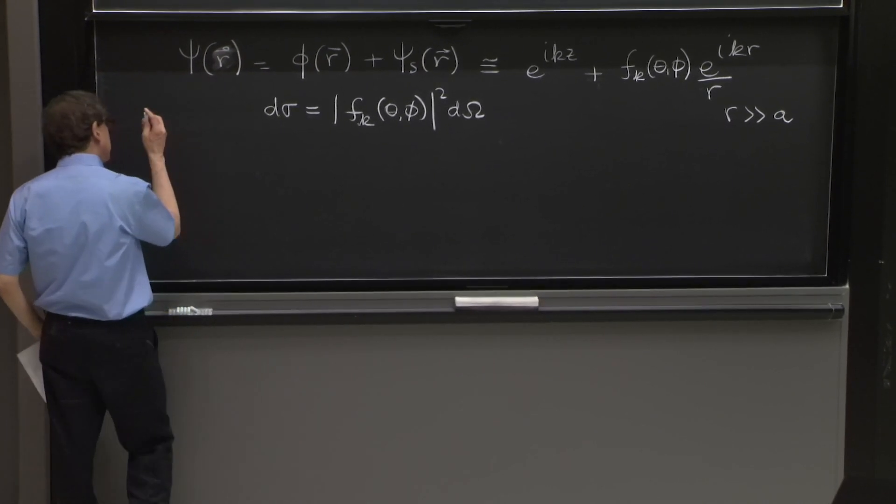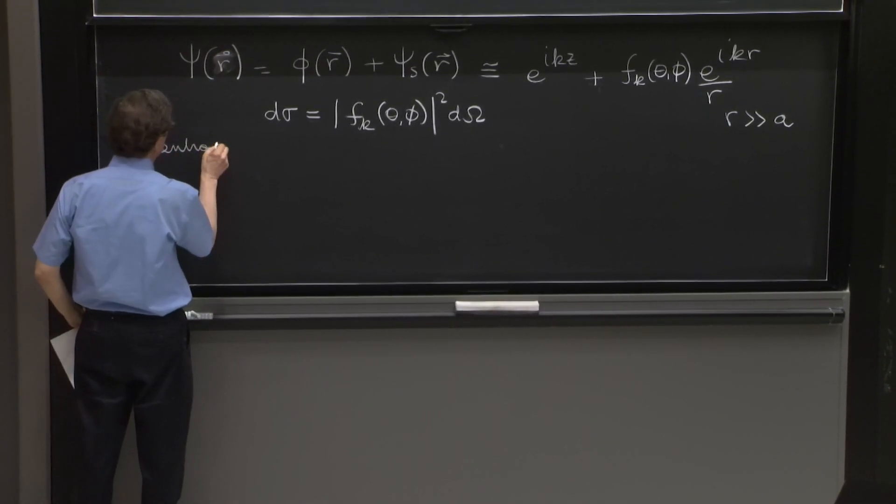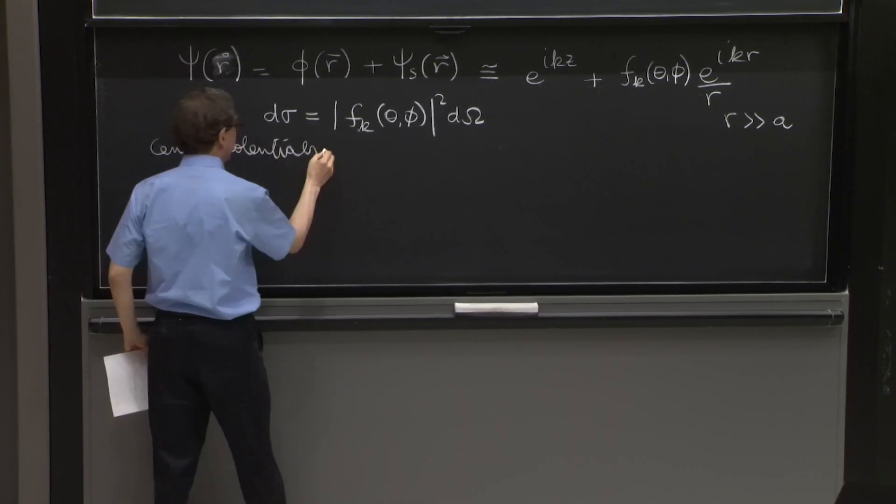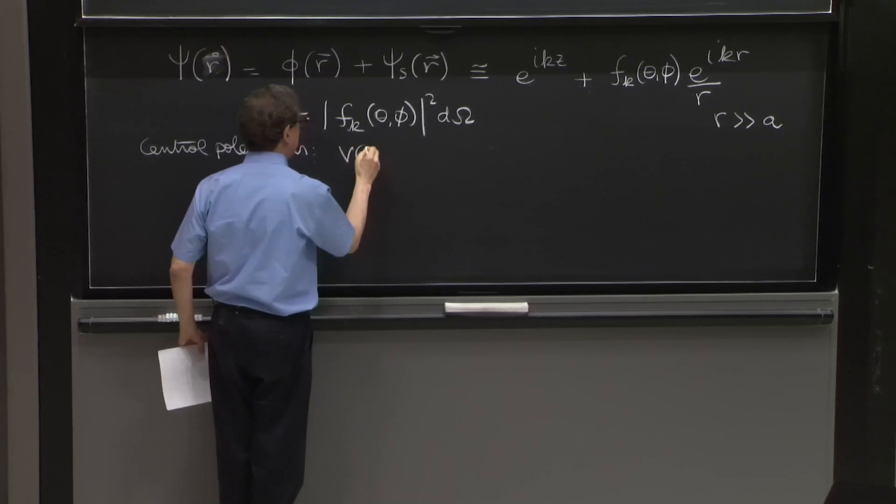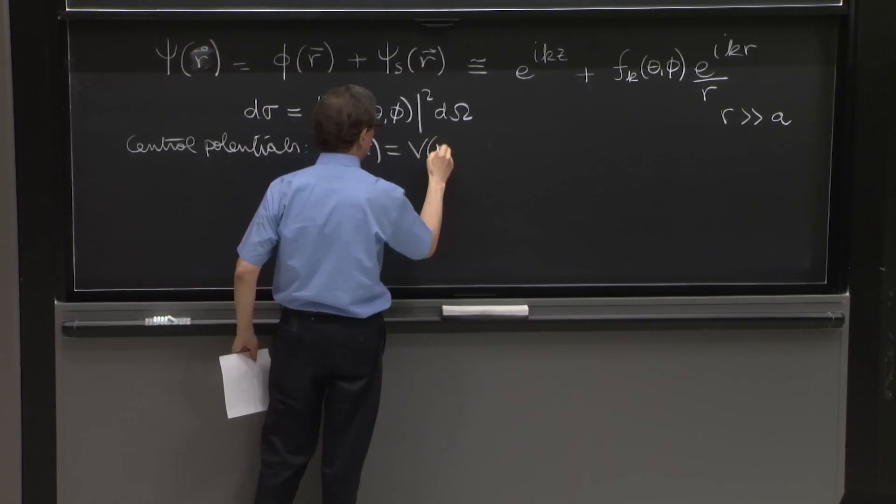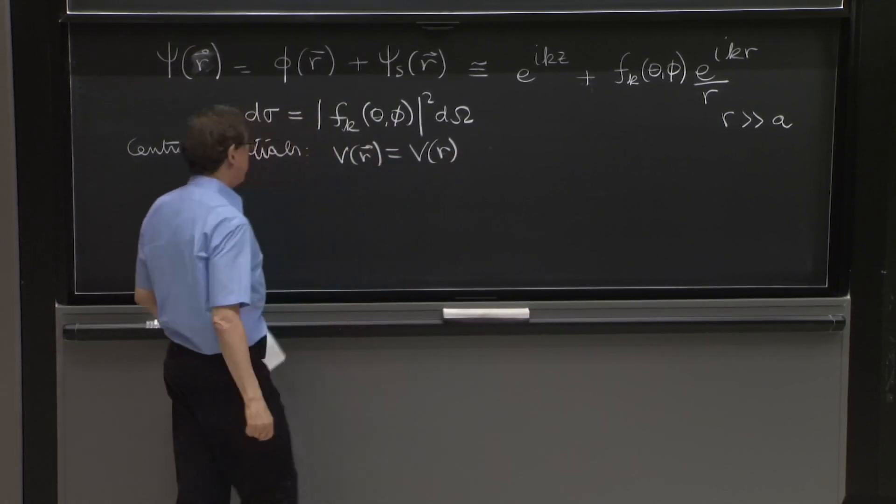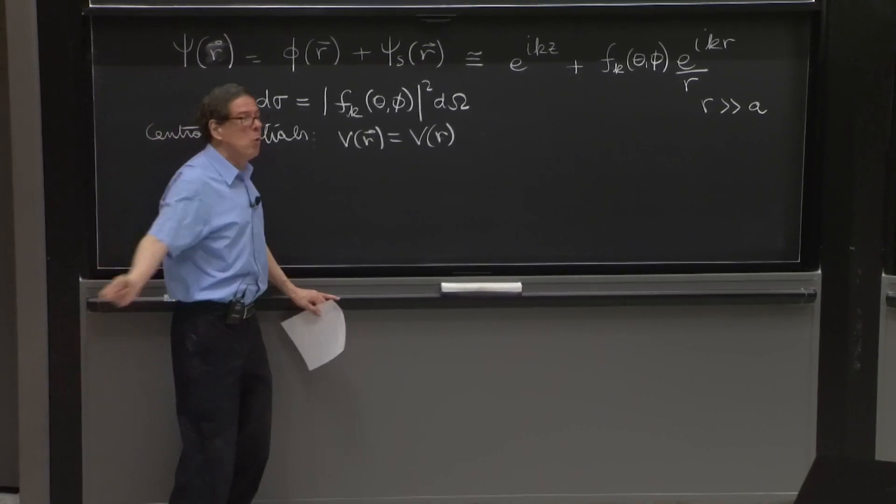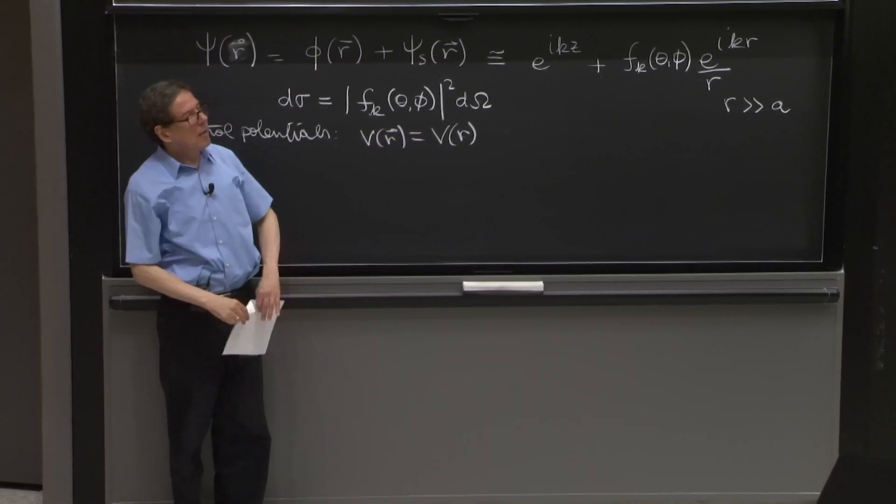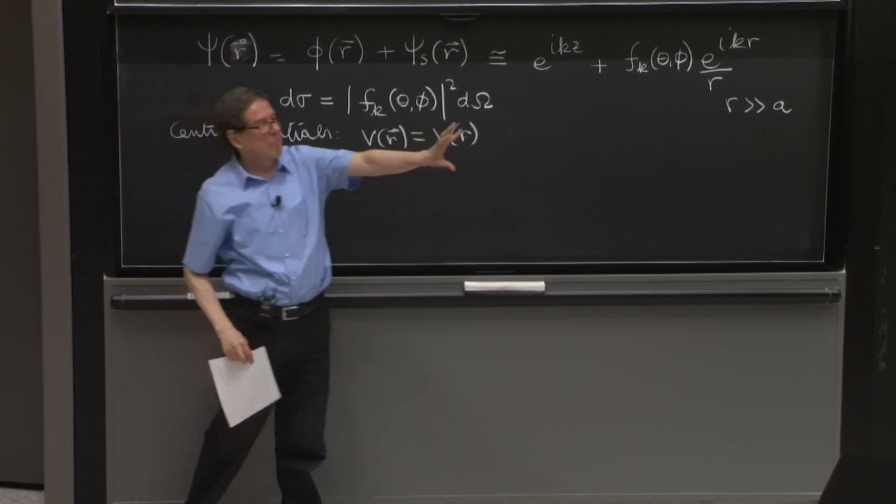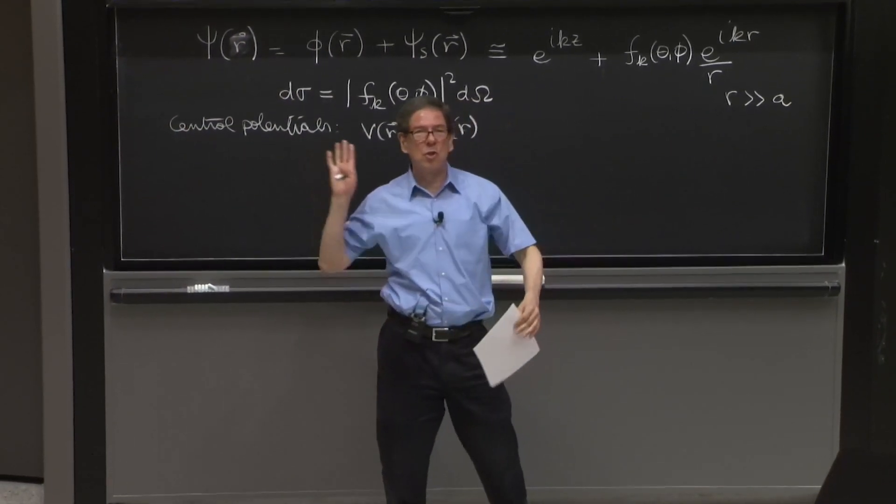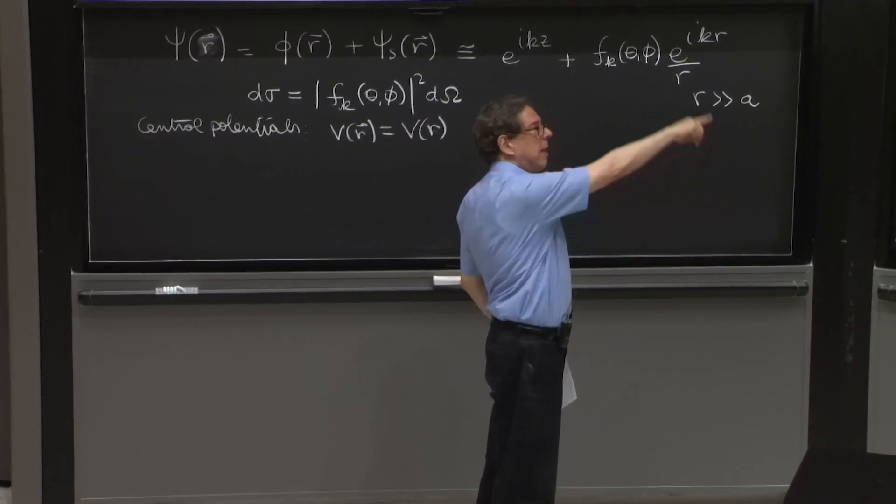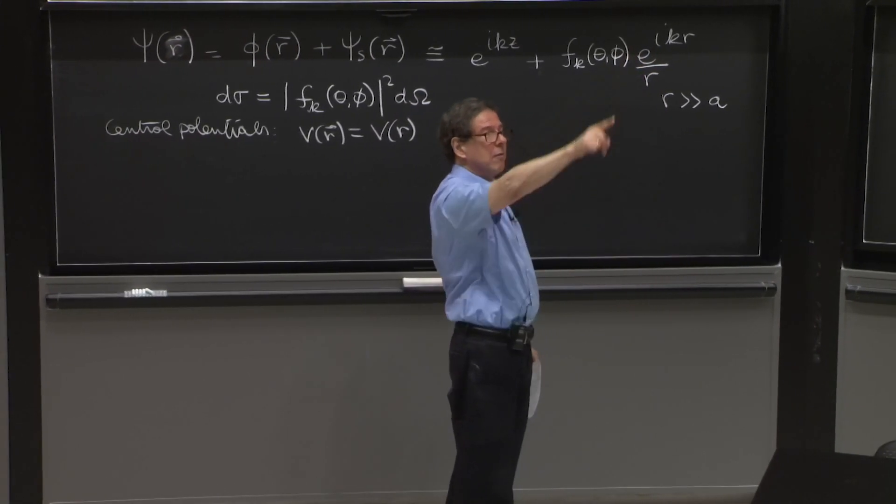Then we've restricted ourselves to the case of central potentials. And for those central potentials, V(R) was some function of just the scalar distance. In such cases, the cross-section would not have a phi dependence. You can imagine, here is the object, it's spherically symmetric, and you're shooting waves. And therefore, the cross-section and the amplitude will be independent of the angle phi.